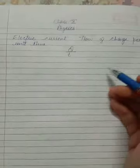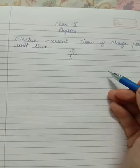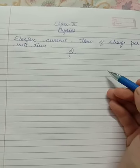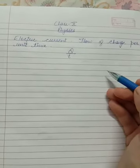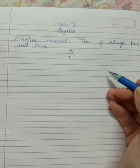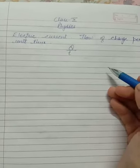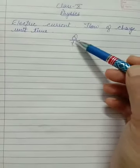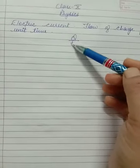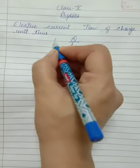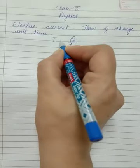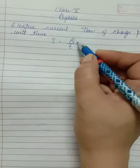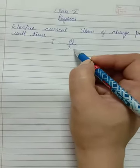We know that electrons flow inside a wire, so this flow of electrons per unit time is called electric current. The formula for electric current I is Q by T, where Q is charge and T is time.